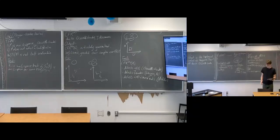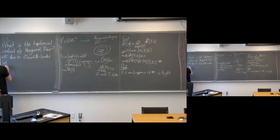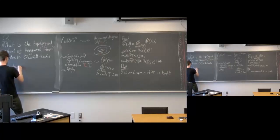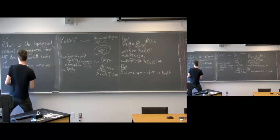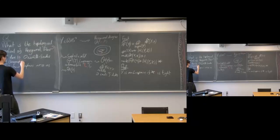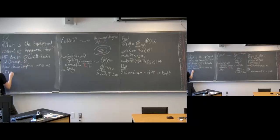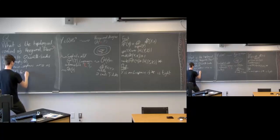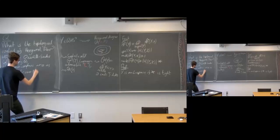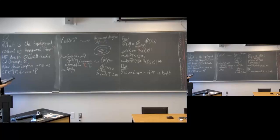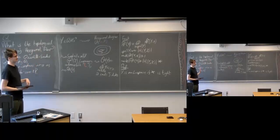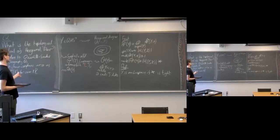A natural question — the geography question — is: which chain complexes arise as CFK∞ of some knot? You could write down chain complexes which do not arise as the CFK∞ type of any knot, so one asks for a characterization of all the chain complexes which do arise.